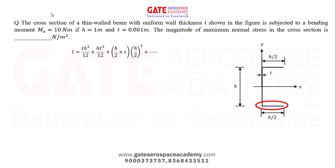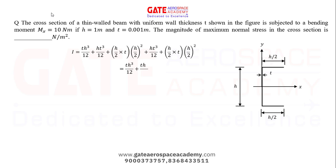For the other flange section it will be the same: ht³/12 plus area (h/2 × t) times (h/2)². Since t is very small, from the thin section approximation we can neglect the higher-order term of thickness, that is ht³/12. So we can write the total moment of inertia as th³/12 plus th³/4.